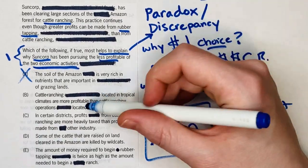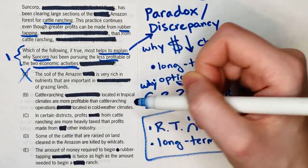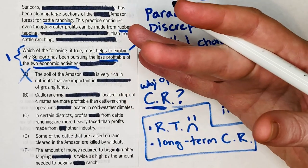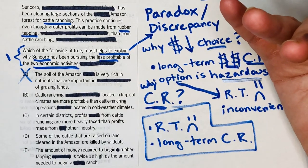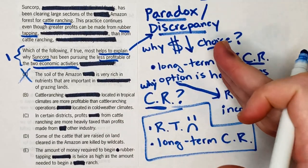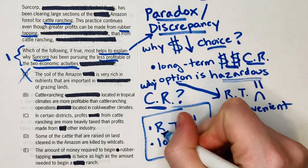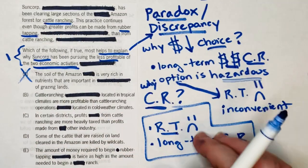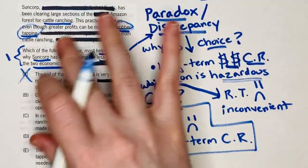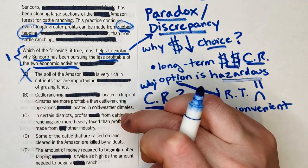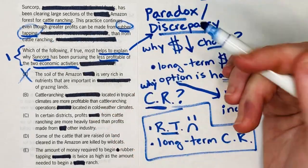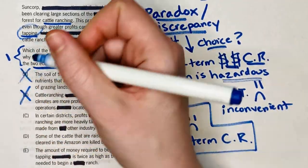Answer B says cattle ranching located in tropical climates is more profitable than cattle ranching located in cold weather. That's basically saying Amazon cattle ranching is more profitable than if you tried to open a cattle ranch in Antarctica — which is fine, but it's not explaining the paradox, which is why they're choosing cattle ranching instead of rubber tapping. And getting meta: if B were right, why did they even mention rubber tapping? What would be the point? So that logic also helps eliminate A.